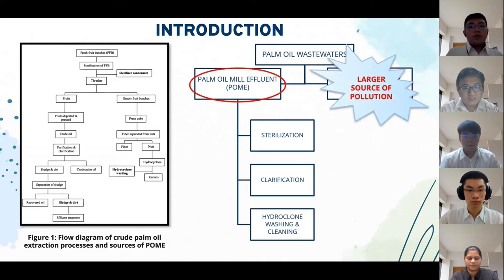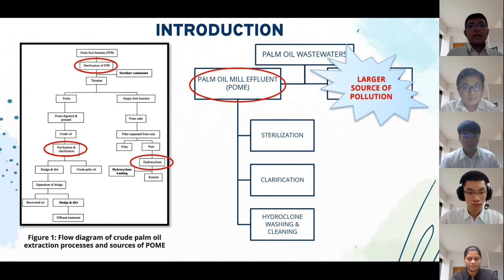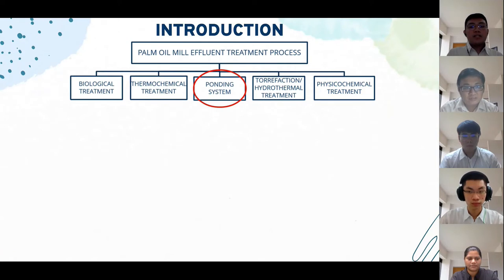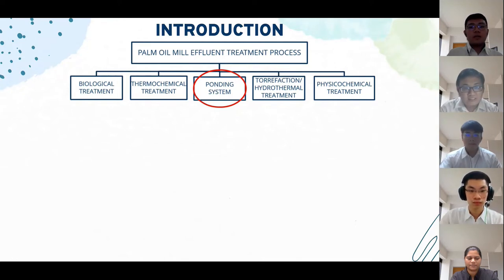Palm oil mill effluent, or POME, is the largest source of pollution. In this video, we are elaborating on how to treat POME using a ponding system. POME is mainly produced in three processes: sterilization, clarification stages, and hydrocyclone washing in the mill. There are several existing technologies to treat POME, such as biological treatment, thermochemical treatment, and others, but in this video we are focusing on the ponding system.